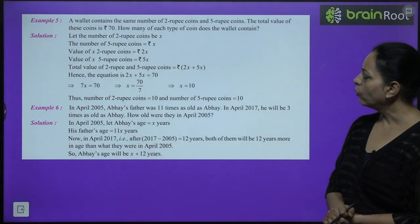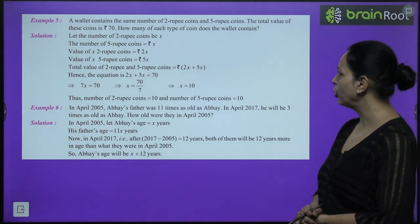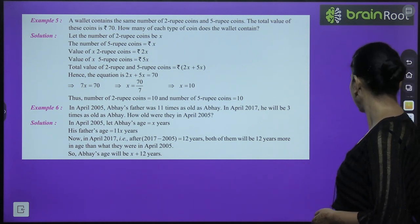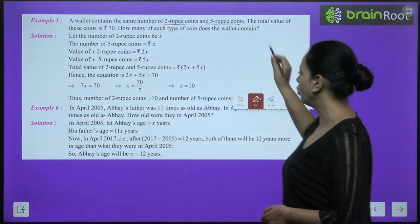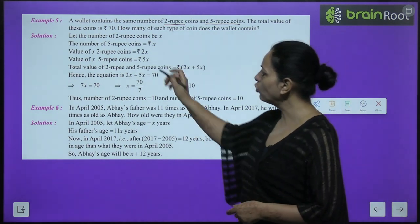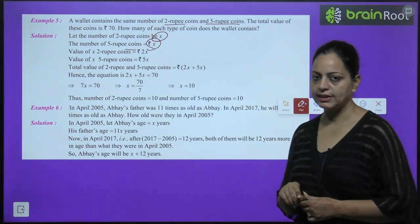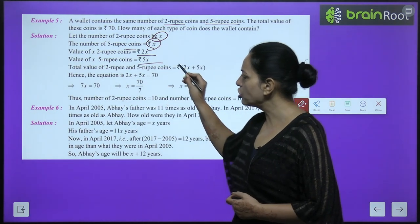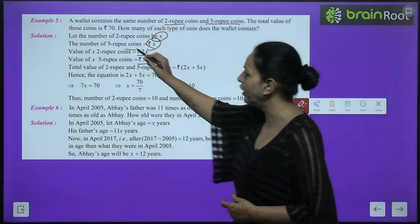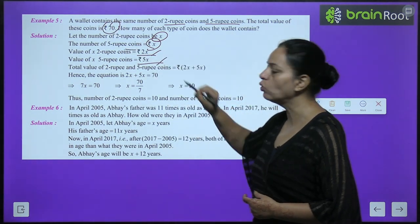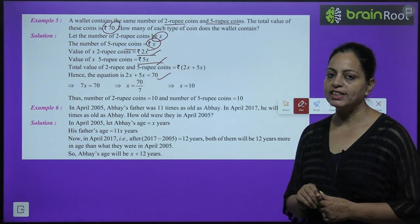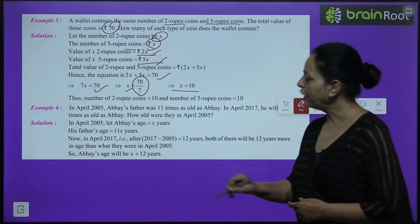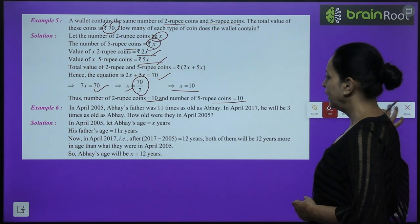Example 5: A wallet contains the same number of 2-rupee and 5-rupee coins. Total value is 70 rupees. Let the number of each type be x. Value of 2-rupee coins: 2x. Value of 5-rupee coins: 5x. Equation: 2x plus 5x equals 70, so 7x equals 70, giving x equals 10. There are 10 coins of each type.